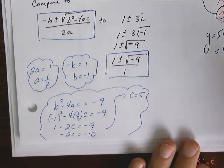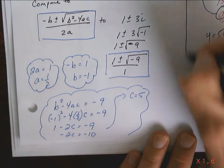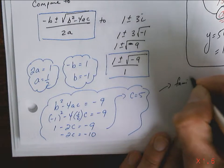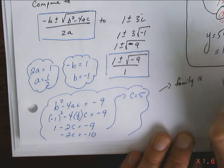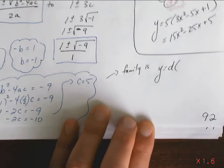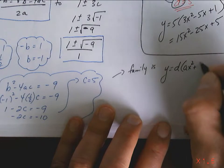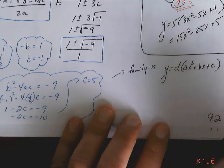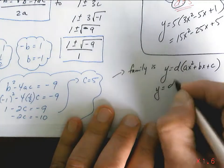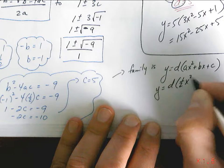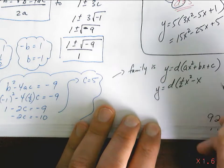So the family is y equals d. Now, do you understand why you need the d? OK, because that's important. And it's going to be ax squared plus bx plus c. Well, in this case, y is going to be d. a was 1 half, b was negative 1, and c was 5.